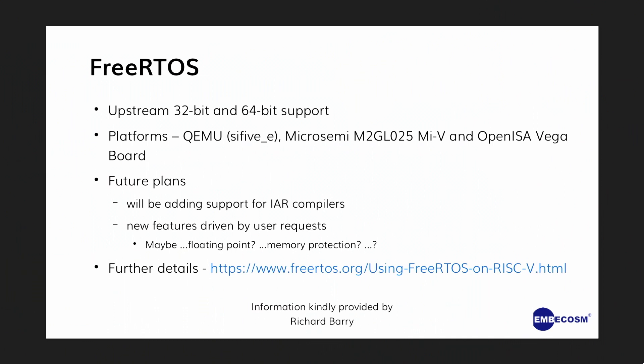FreeRTOS — there will be much more information on this later this morning from Richard. Richard provided a few bullet points: upstream 32 and 64-bit support across a number of platforms. Future plans include adding support for IAR compilers in addition to GCC. He emphasized that new features will be driven by what users want and request, perhaps floating point, perhaps memory protection.